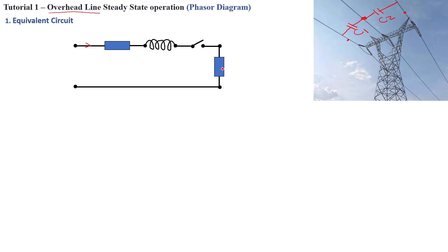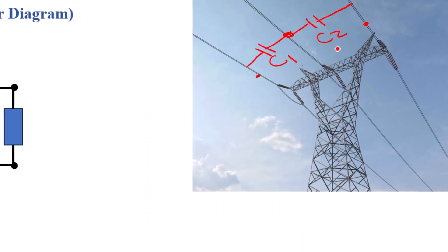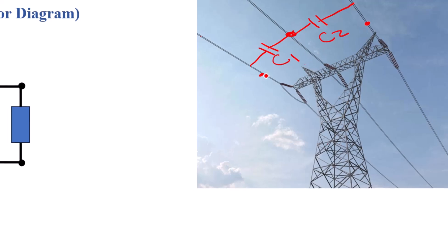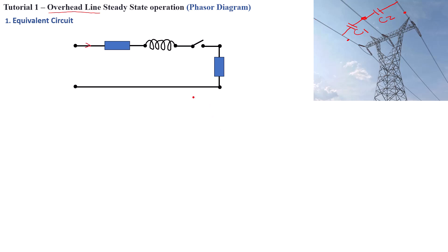Remember, this only applies to overhead transmission lines. If you are dealing with underground systems, the long, short, medium classifications do not apply there, because the cables are going to be too close to each other and you have to consider the capacitance that will build up around the bundled cables. As can be seen here on a normal overhead transmission line, the line spacing between the cables can go up to one meter. But this is not the case underground, where the cables are bundled very tightly together and the capacitance is going to be much higher.